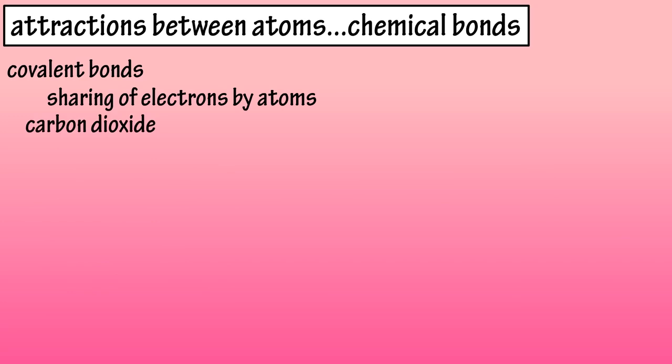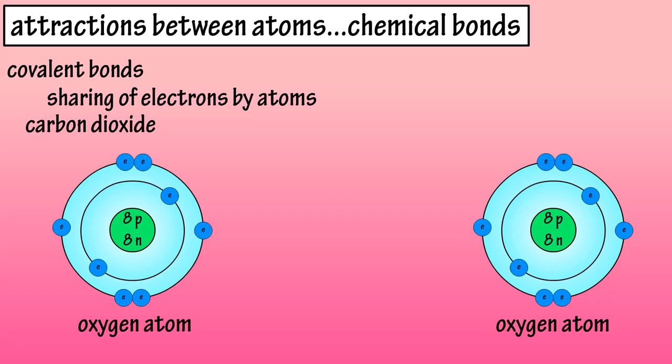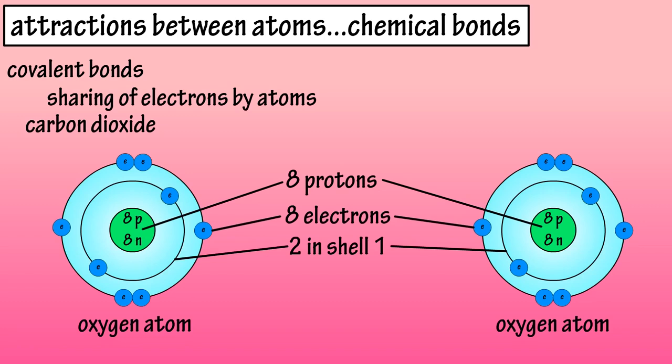Let's look at carbon dioxide, or CO2, which forms a covalent bond. Oxygen has an atomic mass of eight. So, eight protons and eight electrons. Two electrons in its inner shell, and six in its outer shell.